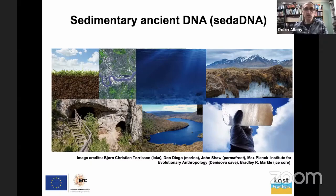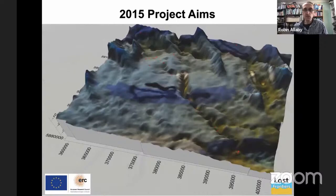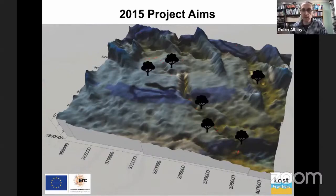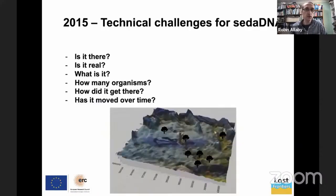Taking these back to the beginning of the Lost Frontiers project, I've borrowed my favourite rendering from Martin of the landscape as we understand it, to visualise what's going on. We had this fairly simple idea that we were going to use DNA to populate the landscape — things like trees on it. But sedimentary DNA is still a developing field, and particularly at this time there were a number of challenges to overcome.